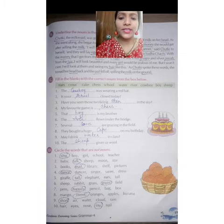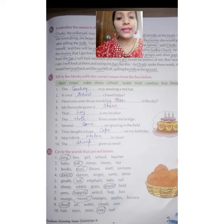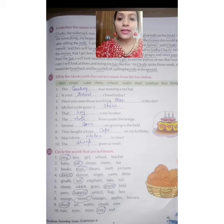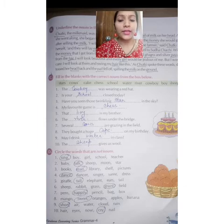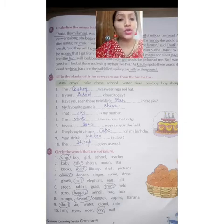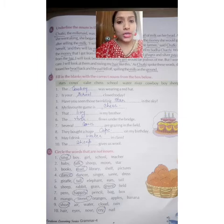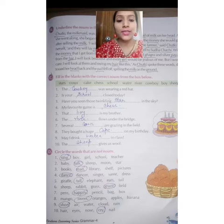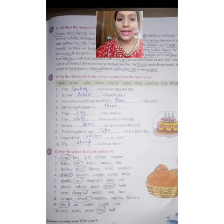I hope you have understood — it is a very simple chapter. Come to Exercise C: fill in the blanks with the correct nouns from the box below. The answers given include stars, cows, cowboys, school, and chess. For example: 'The cowboy was wearing a red hat' — you write cowboys. 'Your school is closed today' — school is the correct word. 'Have you seen those twinkling stars in the sky?' — stars. 'My favorite game is chess.' All these answers are nouns — name of a place, person, animal or a thing.